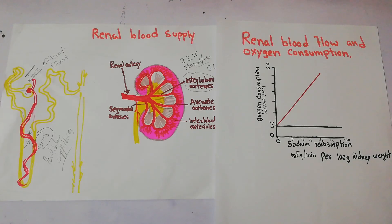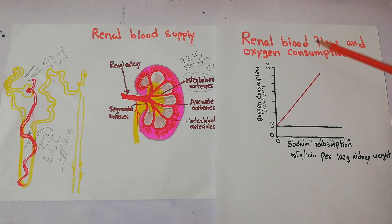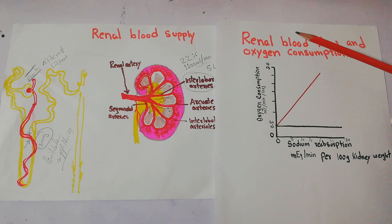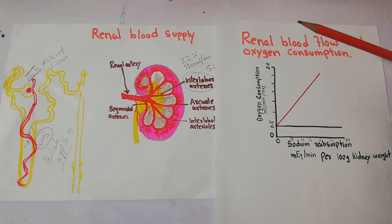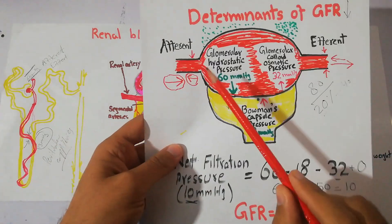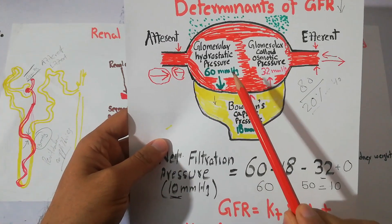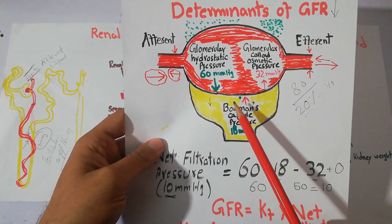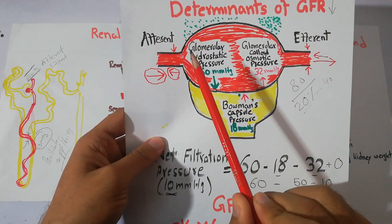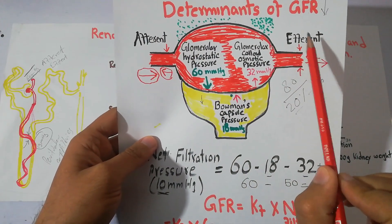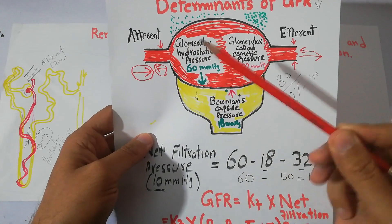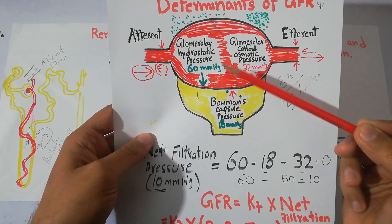Today in this lecture we will talk about concepts related to renal blood flow and oxygen consumption, and discuss why the blood flow and oxygen consumption in the kidney is very high. We have started discussing the process of urine formation, which begins with filtration — filtration of blood in the glomerulus where filtrate enters into the Bowman's capsule. Blood enters through the afferent arteriole, leaves through the efferent arteriole, and between them are glomerular capillaries where filtration of the plasma occurs.